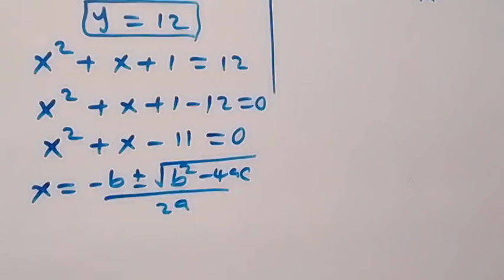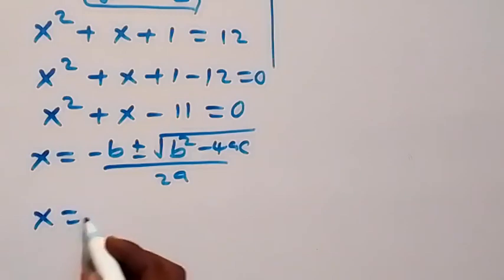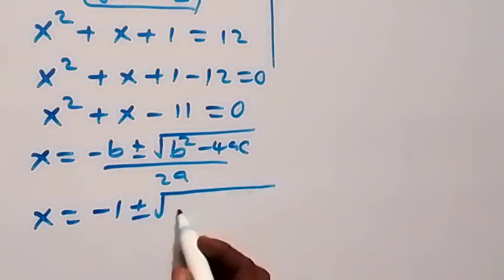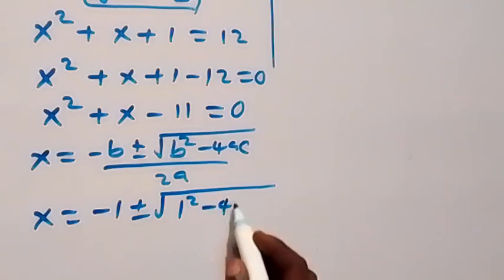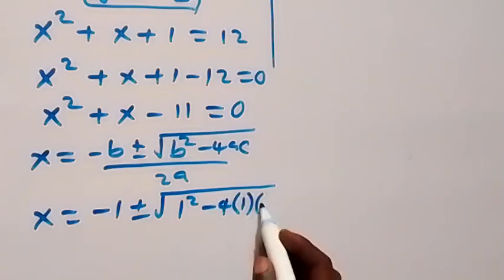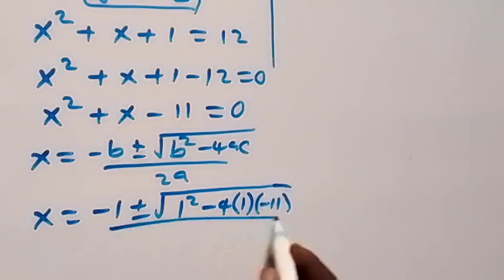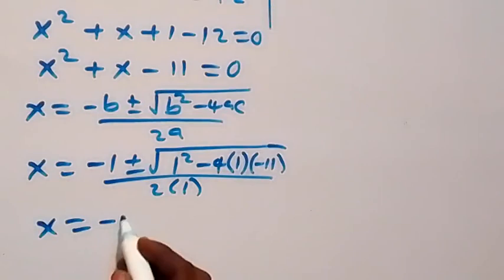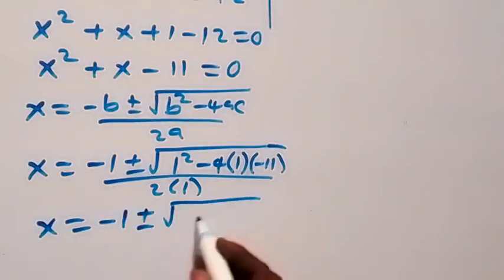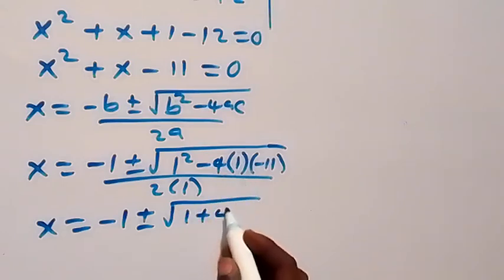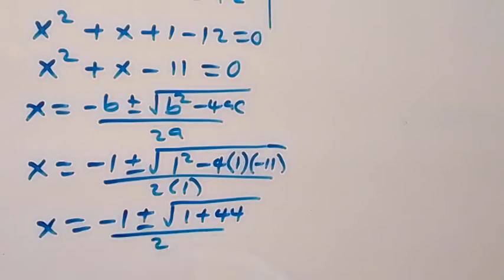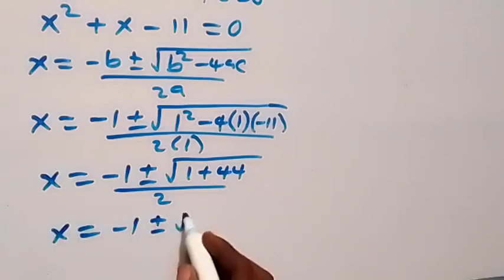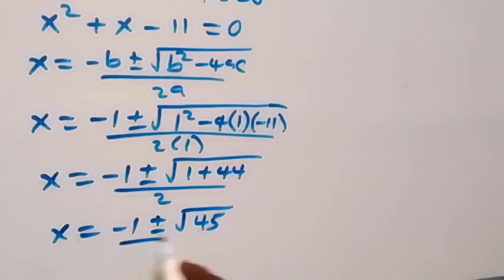Applying the quadratic formula to x squared plus x minus 11 equals 0, we get x equals to minus 1, plus or minus square root of 1 squared minus 4 times 1 times minus 11, over 2 times 1. From here, this gives us x equals to minus 1, plus or minus square root of 1 plus 44, over 2, which gives us x equals to minus 1, plus or minus square root of 45, over 2.